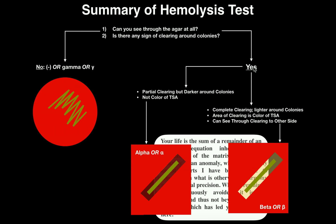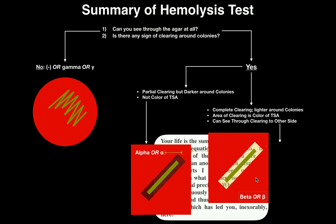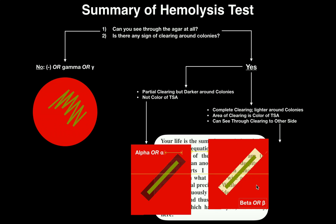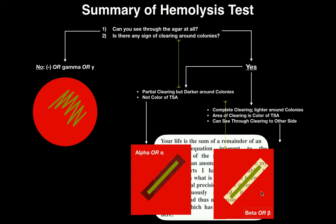If instead of partial clearing you have complete clearing — meaning it's going to be lighter around the colonies and the area of clearing is basically going to be similar to the color of TSA — then you also will be able to see clearly through to the other side of the plate, and you have beta hemolysis. We can actually move the plate while looking through the light, even put some words or a piece of paper on the other side, and if you can see through it clearly, that's indicative of beta hemolysis.